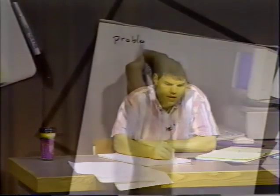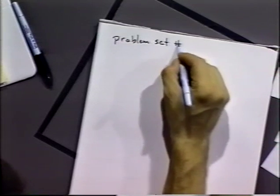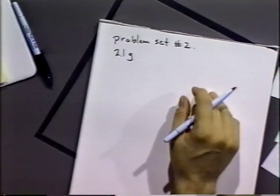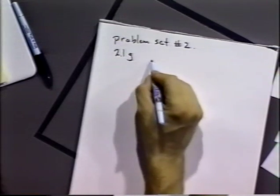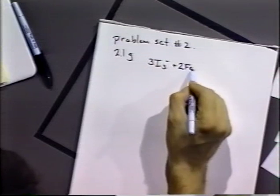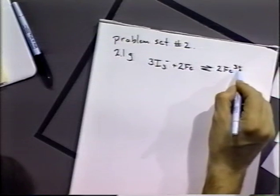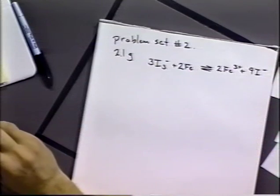There's a couple points. Let's look at problem set number two. If we go to the book and look at number 2.1G, this problem had asked you to come up with a cell diagram for the overall reaction, three triiodide molecules plus two irons going to two iron three plus species and nine iodide ions.